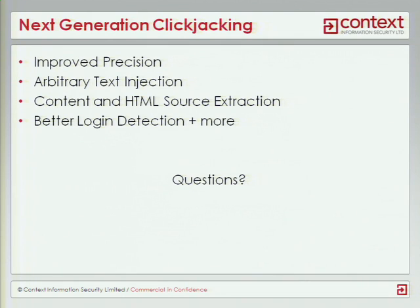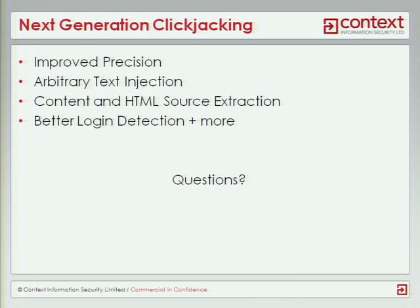So that is next-generation clickjacking. The techniques I've shown you today go pretty much beyond what was originally possible. We've got techniques for improving the precision of our targeting of elements on a page. We can inject arbitrary text into a web page even if it's not vulnerable to any form of cross-site request forgery. We can also go beyond cross-site request forgery - we can actually extract content from a page even if it's not vulnerable to cross-site scripting. And we can use the fragment position detection method to tell various things about what's inside an iframe.